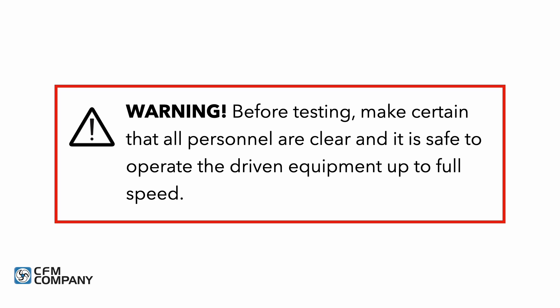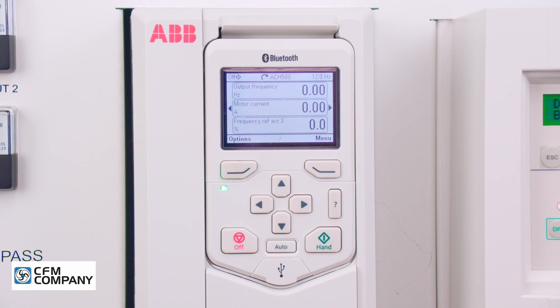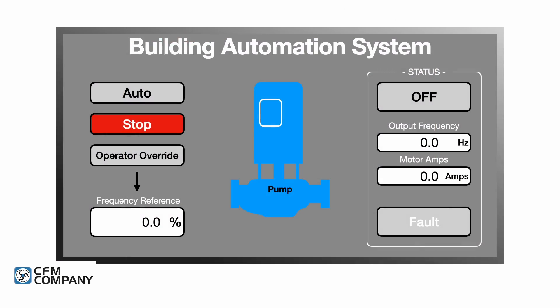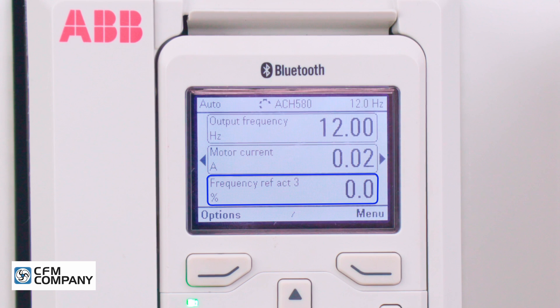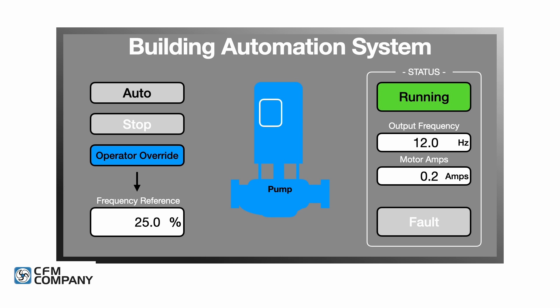With the programming complete, verify functionality with the building automation contractor or the building operator. Before testing, make certain that all personnel are clear and it is safe to operate the driven equipment up to full speed. Press Auto on the ACH580 drive control panel. Send the ACH580 drive a start command through the serial communications. The drive should start and run to the minimum frequency. The third line of the display, Frequency Ref Act 3, should read 0%. Send the drive a 25% frequency reference.